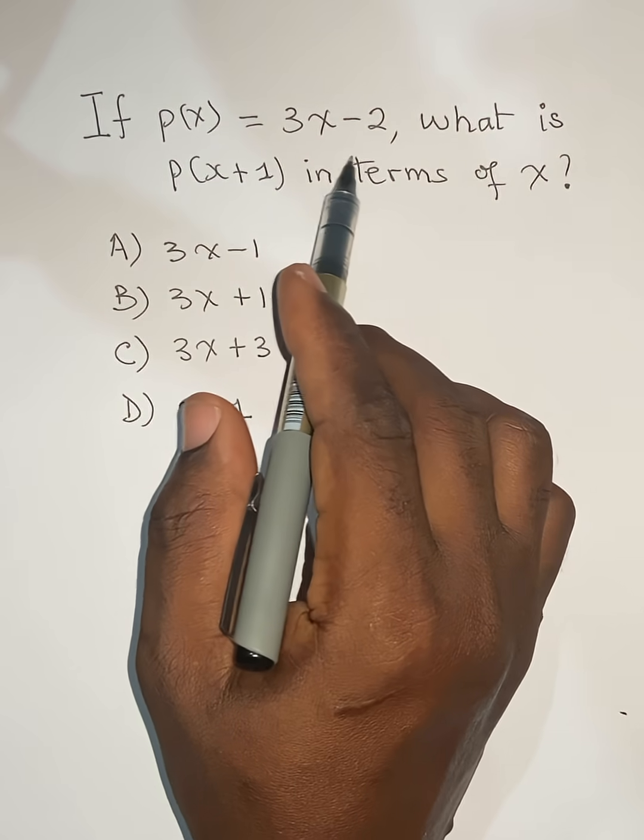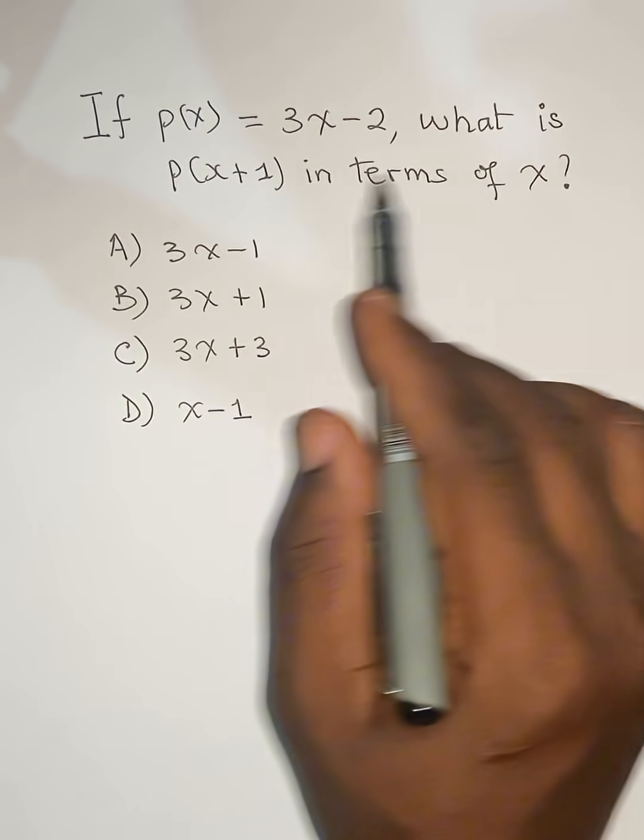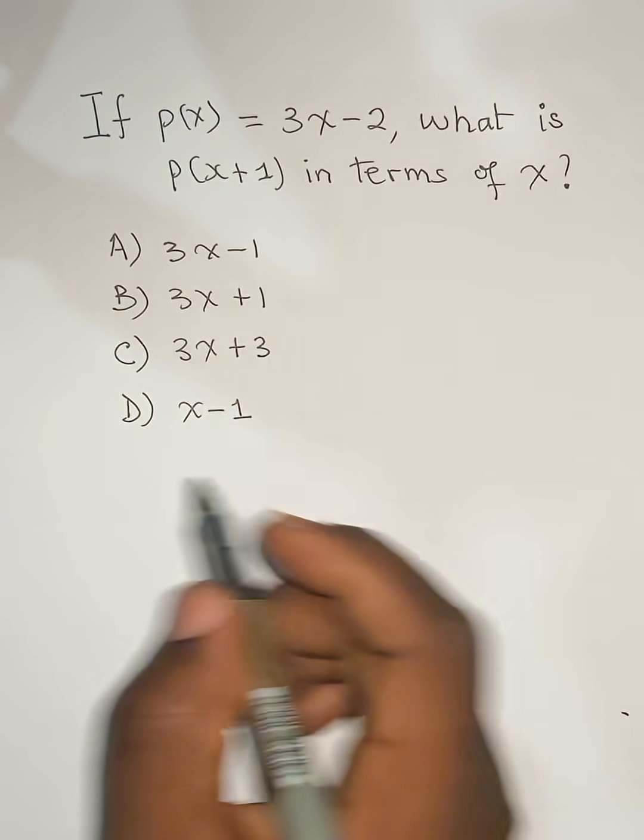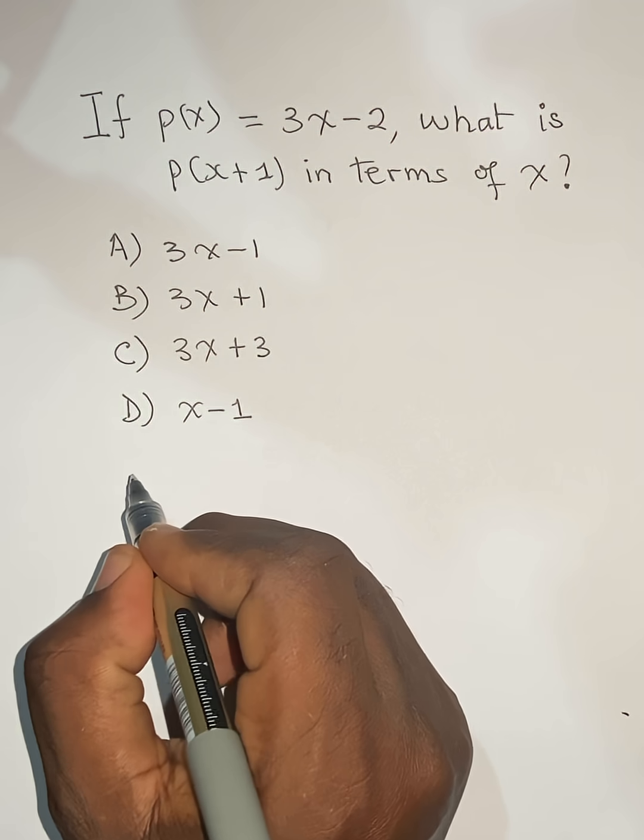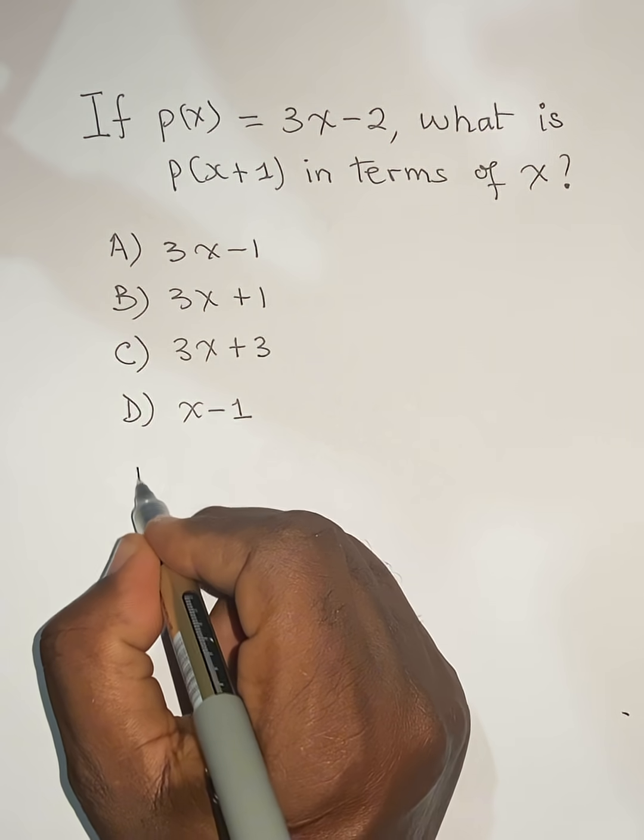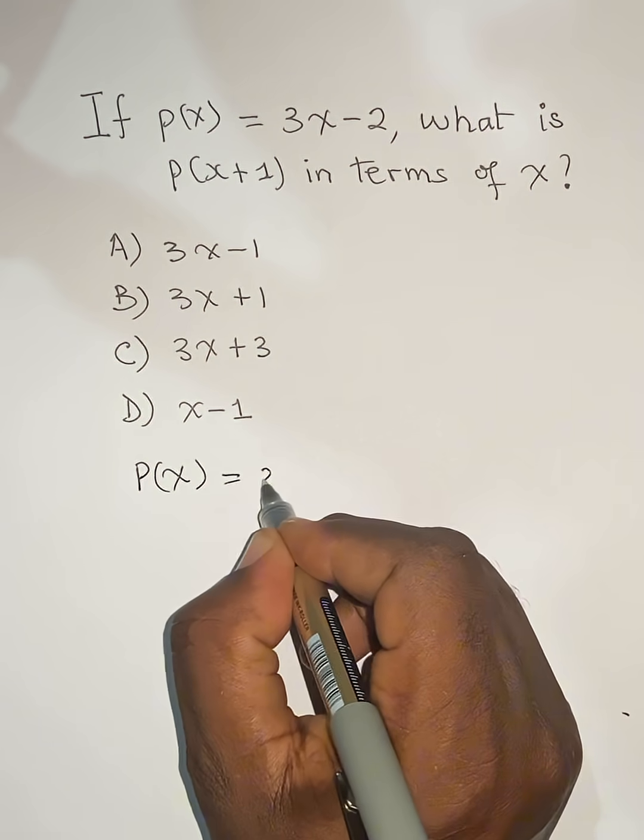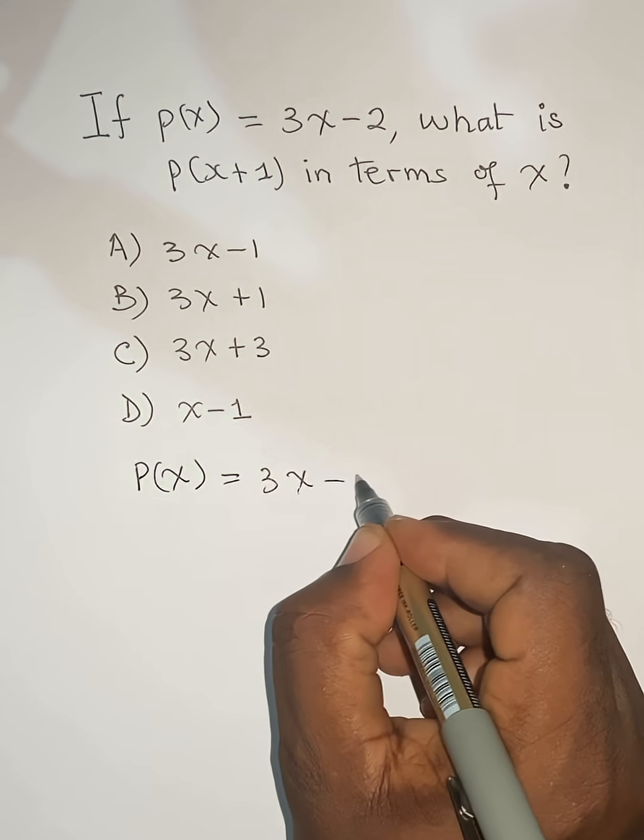If p(x) = 3x - 2, what is the value of p(x+1) in terms of x? Let's solve this. So p(x) = 3x - 2.